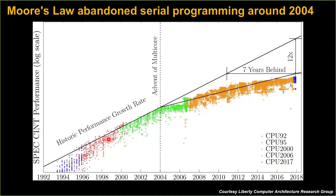Today we're already seven years or so behind where we would have been if that doubling had kept happening. Things have really leveled out — quite visible in lots of different ways besides just the benchmark, including in terms of the clock rates of computers. This is the baseline proof that serial programming is dead in the sense that if you just wait, next year the computers will be faster and run your code faster. That was true for many decades — you could count on things running twice as fast soon enough. That hasn't been true for a while.